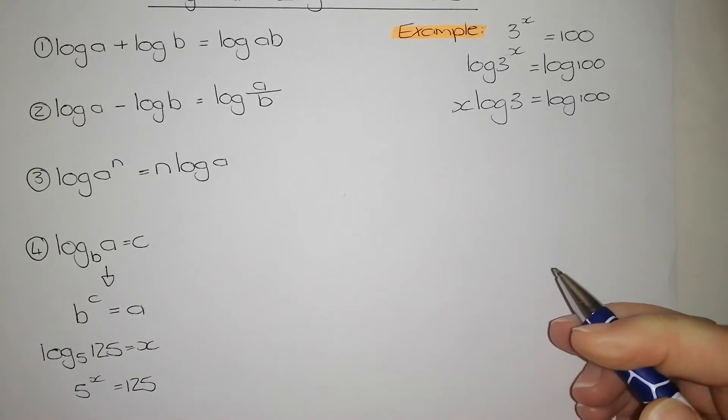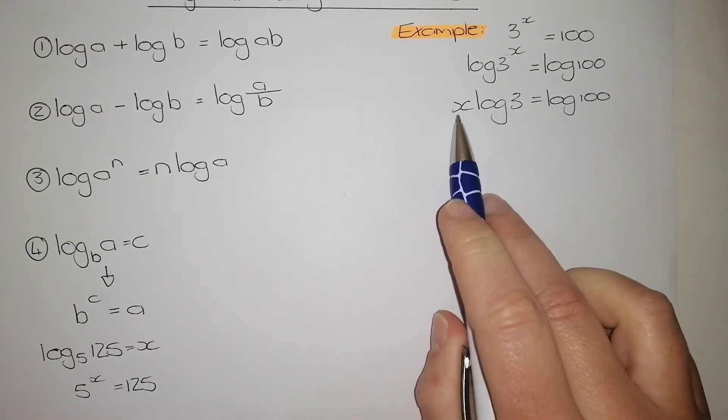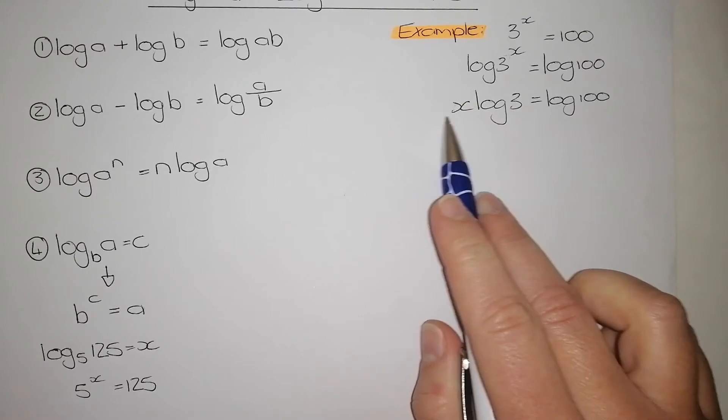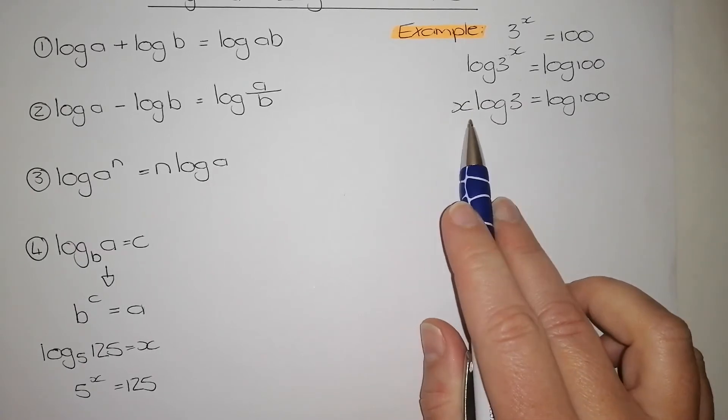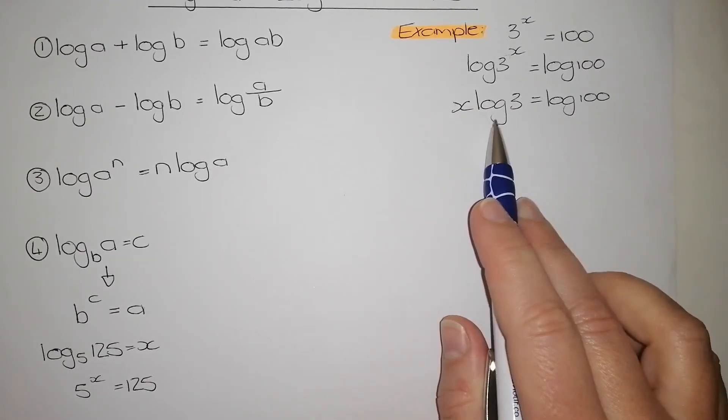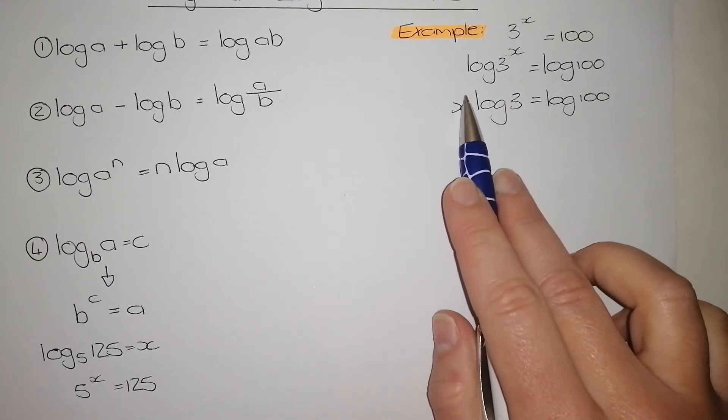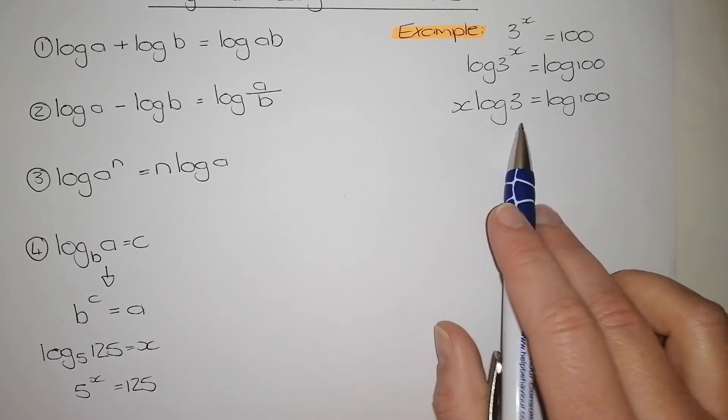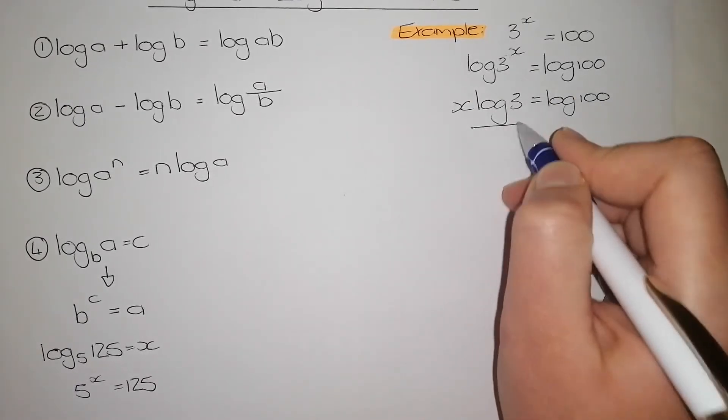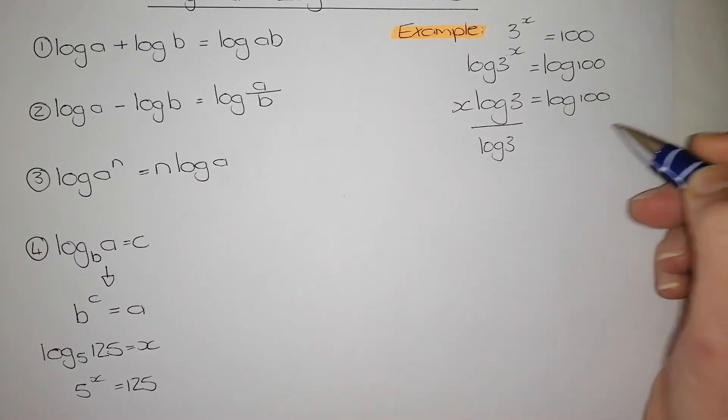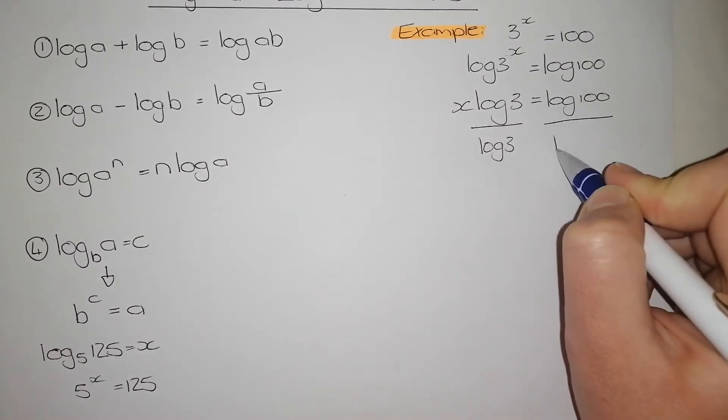Now we apply basic algebra where we need to find the value of x, so I need to have x alone. At this stage, x is multiplying by log of 3. How do we get rid of log of 3? We do the opposite. So, what we need to do is divide by log of 3, and what you do on the left, you need to do on the right.